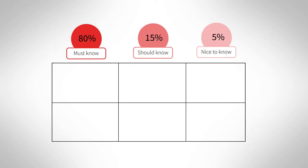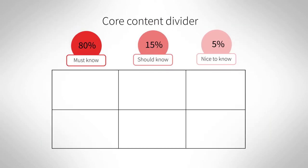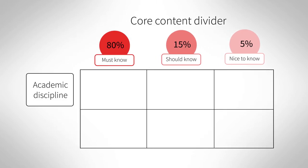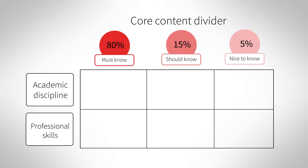Here you can see a core content divider, in which the content is divided into must-know, should-know and nice-to-know contents. Sometimes the content is subdivided further into the academic discipline and professional skills categories, in order to enable a more detailed analysis of the knowledge and skills, as has been done in this case.